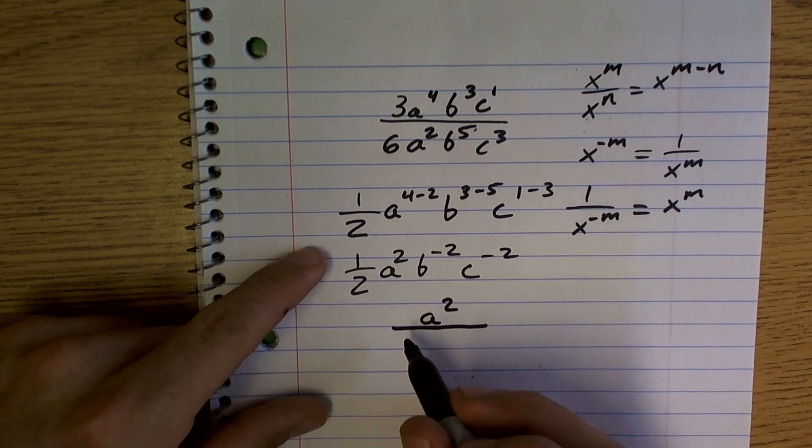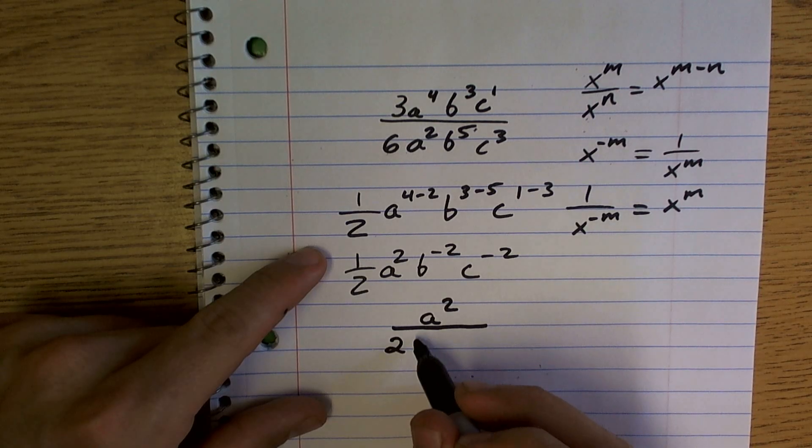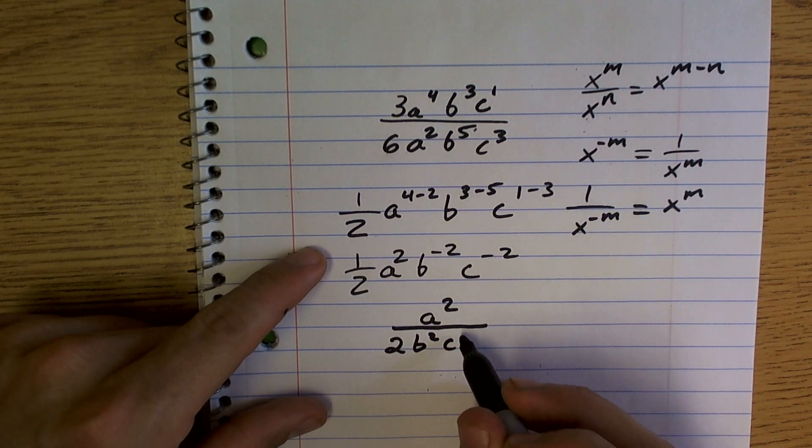c to the one minus three. Two times b squared, c squared.